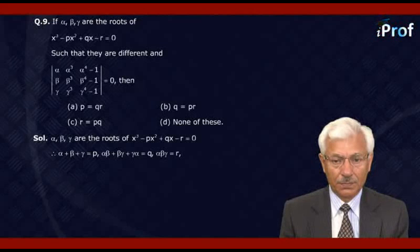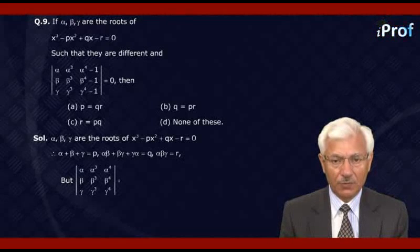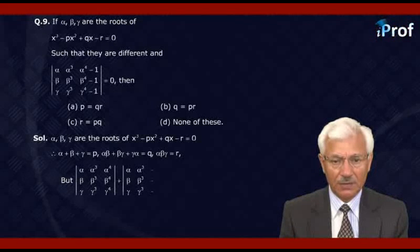Now, the determinant with first column (α, β, γ), second column (α³, β³, γ³), and third column (α⁴-1, β⁴-1, γ⁴-1) equals 0.